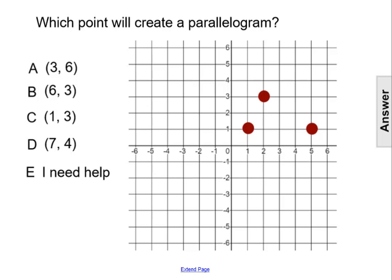Which point will create a parallelogram with the three points that are already graphed below? So we need one of these options to be a fourth point that creates a parallelogram, and a parallelogram has the opposite sides parallel to each other. So if we connect the three vertices we already have,